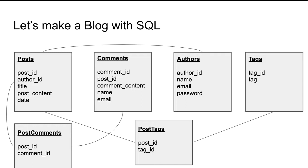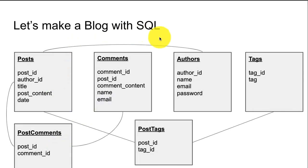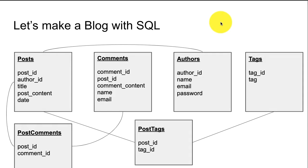Here is an example schema you might use for a blog using MySQL or SQLite, where you have your posts on the left, and then you have to somehow link all the comments on that post using a post comments table. If you have a multi-author blog, like a news site, you'll have multiple authors linked via author ID. And if you have a multi-subject blog, you're going to have different tags — like a sports blog with cycling, swimming, and other categories.